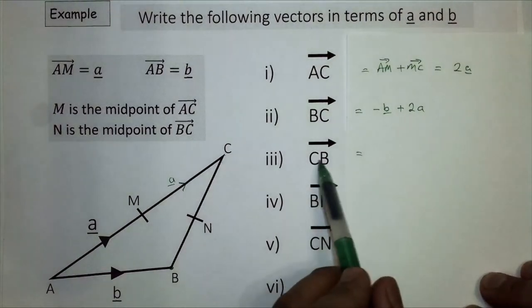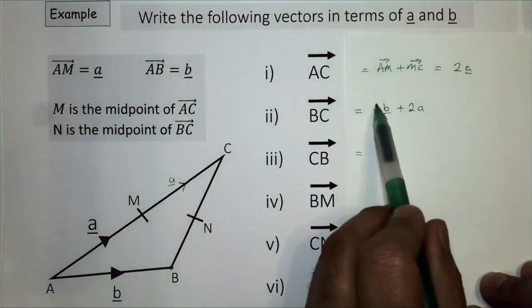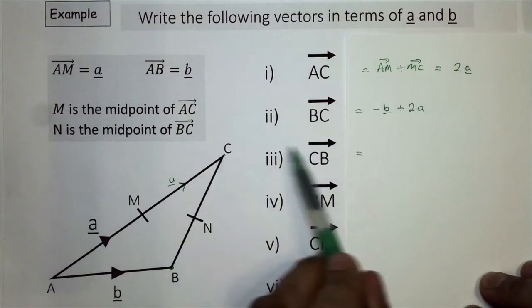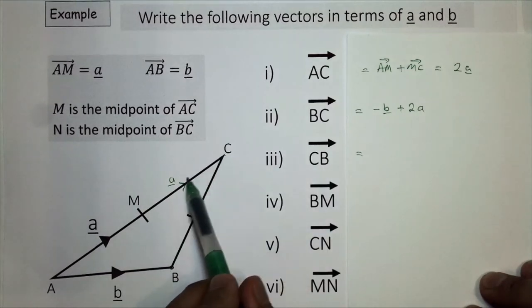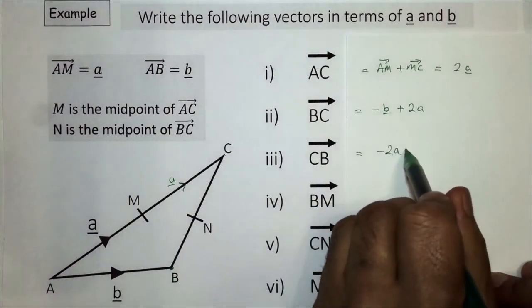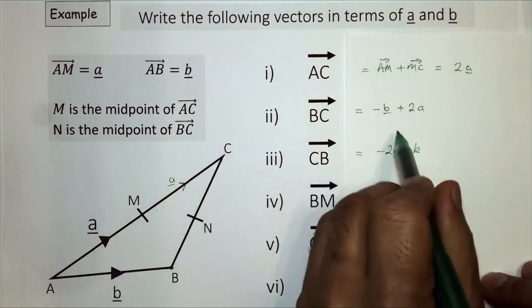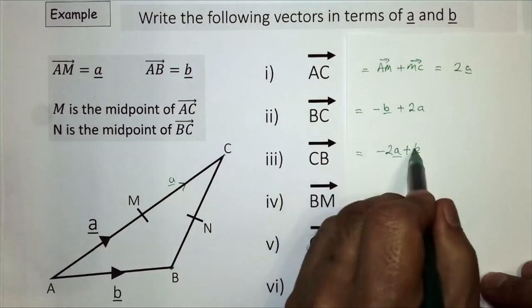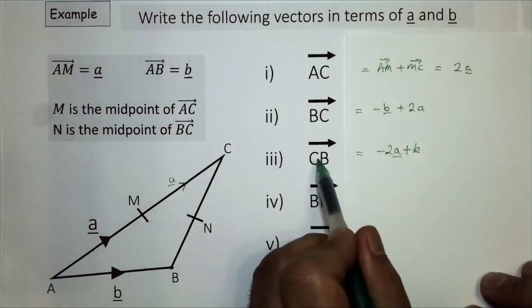Next, the vector C to B - it's the opposite of BC, so we should expect it to go in the opposite way. Following the path starting from C, it'll be minus 2a plus b. Comparing to BC, the signs are all reversed: CB is equal to minus 2a plus b - the same vector in the opposite direction.